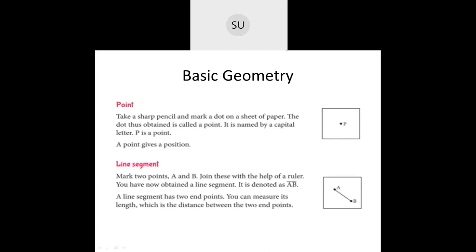Then we saw what is a line segment. It has two end points and you can measure its length. The length of the line segment is the distance between the two end points. A line segment is denoted as AB with a line on top, and we read it as line segment AB.